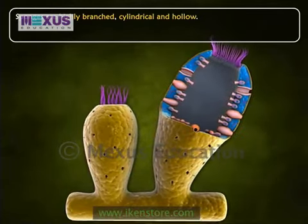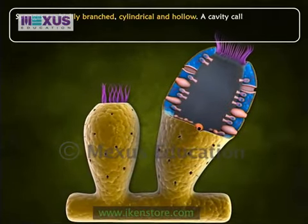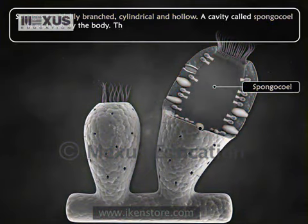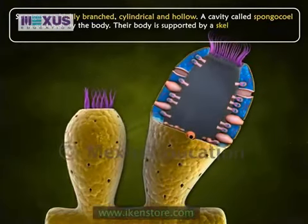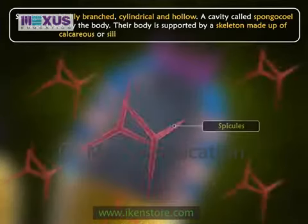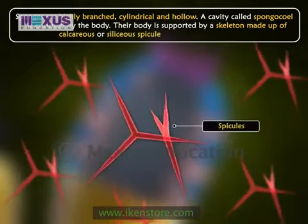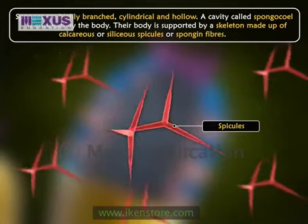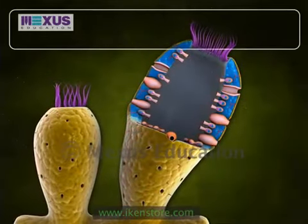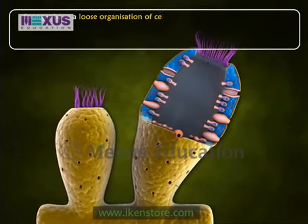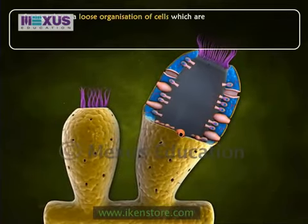A cavity called the spongocoel is enclosed by the body. Their body is supported by a skeleton made up of calcareous or siliceous spicules, or spongin fibers. Sponges have a loose organization of cells which are specialized to perform different functions.